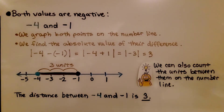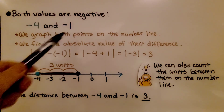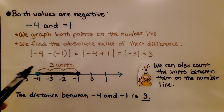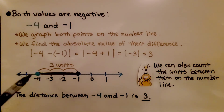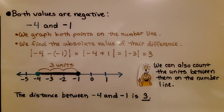Let's see another one with both values negative. We have negative four and negative one. We graph both points on the number line and count the units between them. Here's negative four, here's negative one — we have three units between them. The distance between negative four and negative one is three.